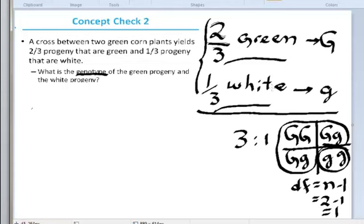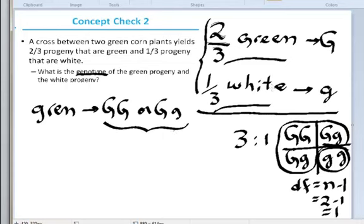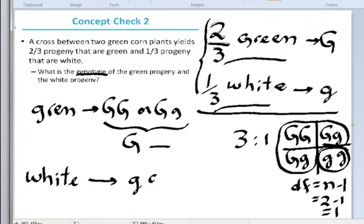and your white phenotype would be your recessive phenotype. So here the answer would be green and can also be represented as that, and then your white phenotype would have to be your recessive phenotype.